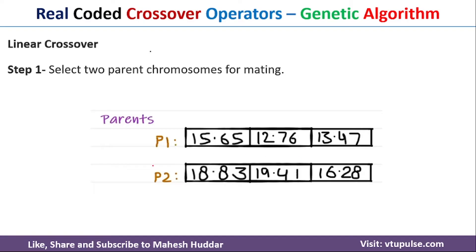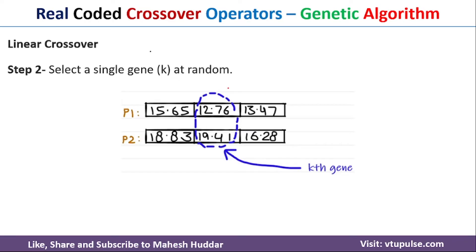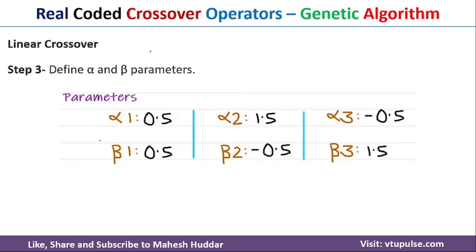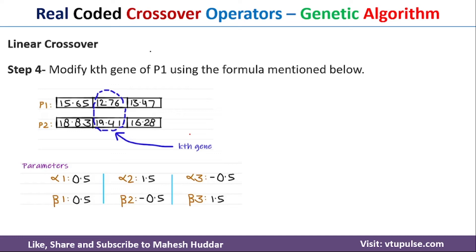Moving to the next crossover operator: linear crossover. Again we select two parents p1 and p2 for mating, then randomly select the kth gene — in this case the second gene. In linear crossover we select parameters alpha and beta. If you select alpha 1 and beta 1 you get one offspring o1. For two offspring you need alpha 1, alpha 2 and beta 1, beta 2. For three offspring o1, o2, o3 you need alpha 1 through 3 and beta 1 through 3.